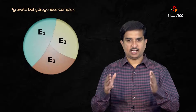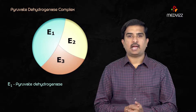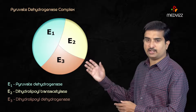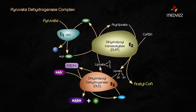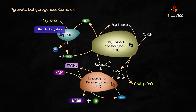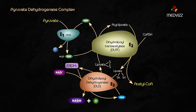The complex has three enzymes: E1 is pyruvate dehydrogenase, and the other two are E2 and E3. E1 requires cofactors like thiamine pyrophosphate, a derivative of vitamin B1, and this is considered the rate-limiting step. E2 requires cofactors like coenzyme A and lipoic acid, producing acetyl-CoA. E3 requires cofactors like FAD, derived from vitamin B2, and NAD+, which is vitamin B3.